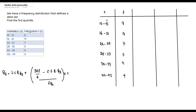The formula says we are going to need the lower class boundaries, so we create a space for the class boundaries. We also need the cumulative frequencies, so we add a column for those as well.